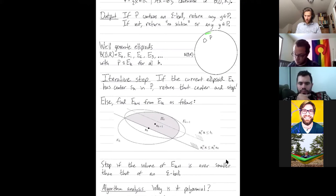Start with the outer ball. Find these successively smaller and smaller ellipses. If the center of an ellipse ever is inside the feasible region, return it. You found a solution. And if you ever get down to ellipses of too small a volume, you know, there's no epsilon ball. Roughly speaking, why is this a polynomial time algorithm?